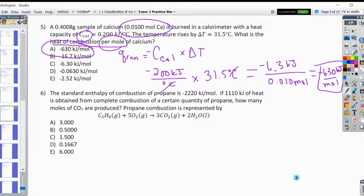Okay, number six. So the standard enthalpy of combustion is negative 2220 kilojoules per mole, and if only half of that heat is obtained from a complete combustion of a certain quantity of propane, how many moles of CO2 are produced? So to approach this problem we want to say if this is how much energy is actually obtained from the actual reaction.